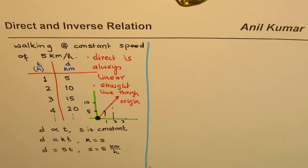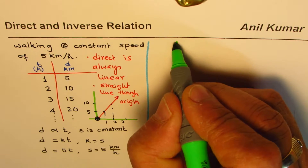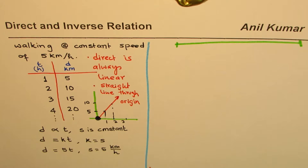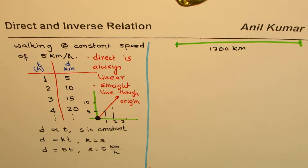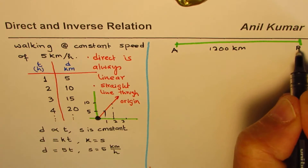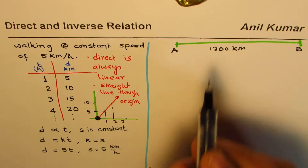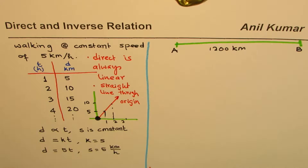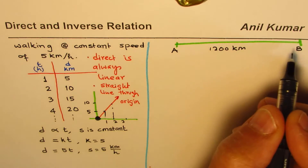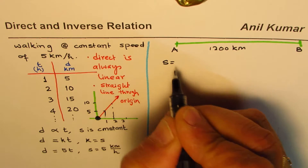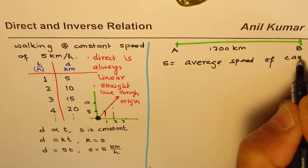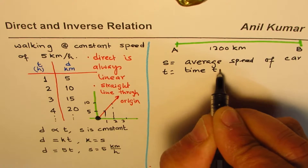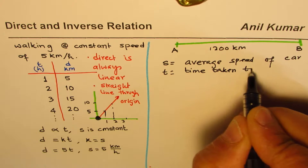Now let's change the situation. This time I have to cover a fixed distance — let's say a distance of 1,200 kilometers. So I'm going from point A to point B, and the distance between these two points is 1,200 kilometers. I'm going in a car, and S is the average speed of the car, and T is the time taken to cover this distance.